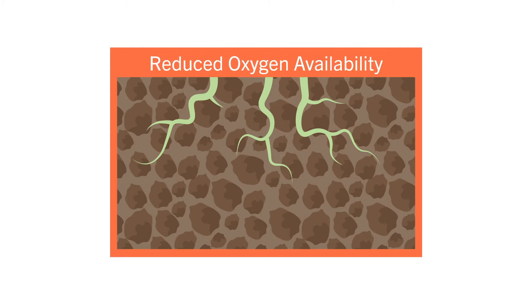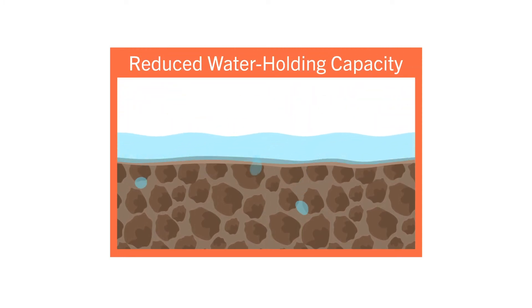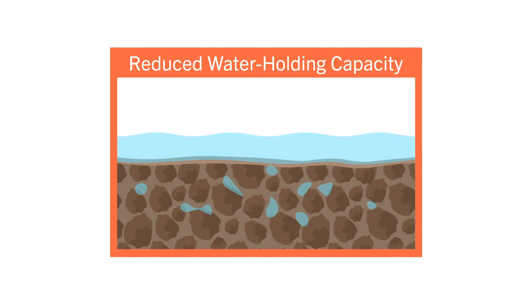You also reduce your oxygen availability, so your roots will suffocate. On the water standpoint, when you have compacted soils, water has a hard time getting into the soil. And since you don't have any pore space, your soils cannot store water very well. So you can't bring it in, and you can't keep it there. Lots of different functions in the soil are impacted by compaction.